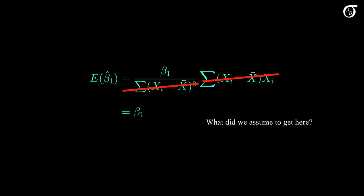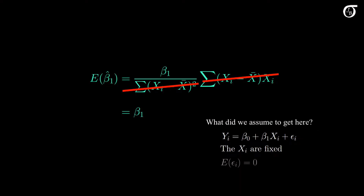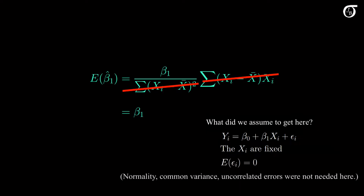What did we assume along the way here? Not much. We assumed that the x's were fixed, which made our life a little easier, and we assumed that the epsilons had zero mean. We didn't need any of the other assumptions of our linear regression model here.